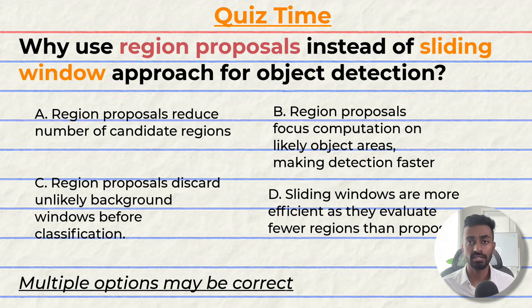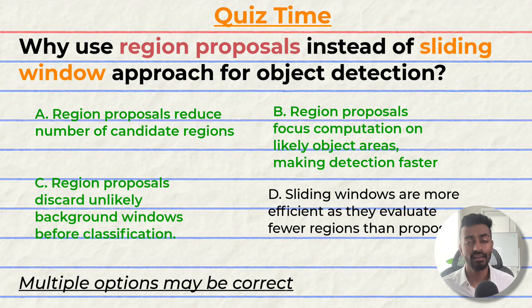The correct options are A, B, and C. Did you get them right? Comment your reasoning down below, and let's have a discussion.